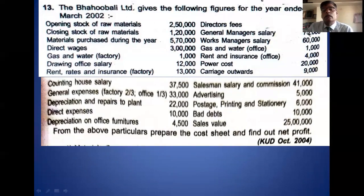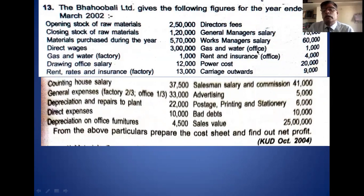Director fee is related to administration, therefore it is an administration expense. General manager salary is related to office and administration. Works manager salary — work means production, so it relates to factory overhead. Gas and water in brackets office means it is an office expense. Power is used in the factory, therefore it is a factory overhead.